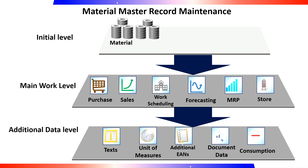The main work level consists of screens for the individual user departments, such as sales data, purchase data, materials planning, and so on. The additional data level contains screens where you find additional information, such as alternative units of measure, material short descriptions, and consumption values. The data retained within a view may be valid for different levels.